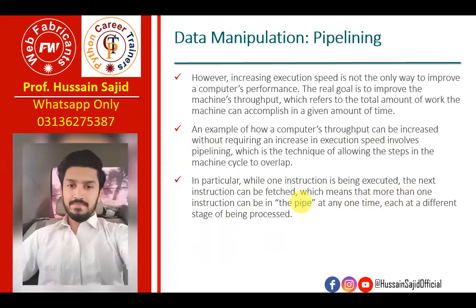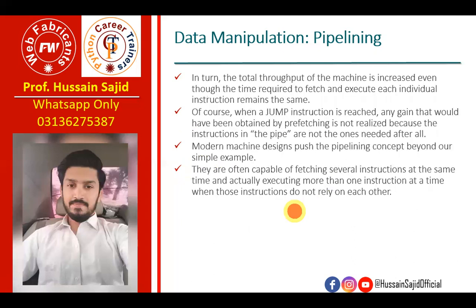You can fetch instructions at different stages of being processed. So in turn, the total throughput of a machine is increased, even though the time required to fetch and execute each individual cycle remains the same. If you have more than one instruction at a time, then you save time and your performance increases.